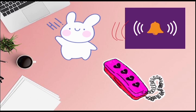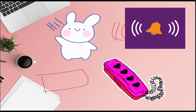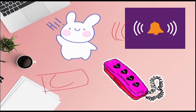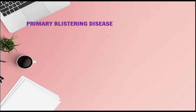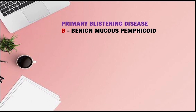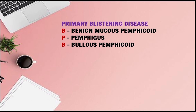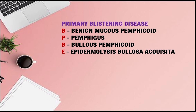Remember the words 'multiple' and 'contact.' Coming to the primary part of the story, that is the primary blistering diseases: B for Benign Mucous Pemphigoid, P for Pemphigus. Then from 'phone bell,' B for Bullous Pemphigoid, E for Epidermolysis Bullosa Acquisita, L for Lichen Planus.